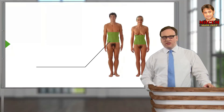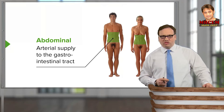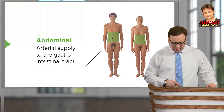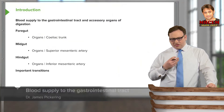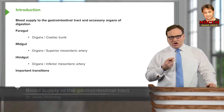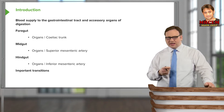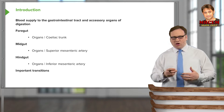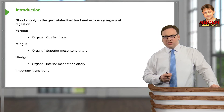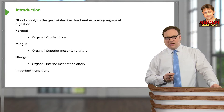In this lecture, we're going to look at the arterial supply to the gastrointestinal tract. We're going to look at the numerous arteries that supply nutrient-rich, oxygen-rich blood to the gastrointestinal tract — to the duodenum, the stomach, the colon, parts of the small intestine, and also to the accessory organs of digestion, like the pancreas and the liver.